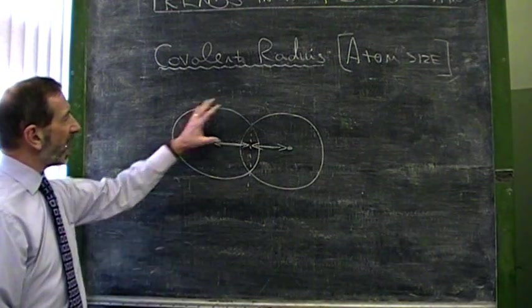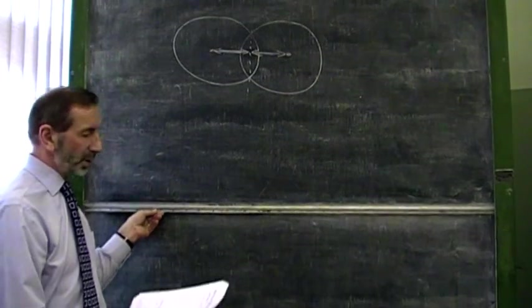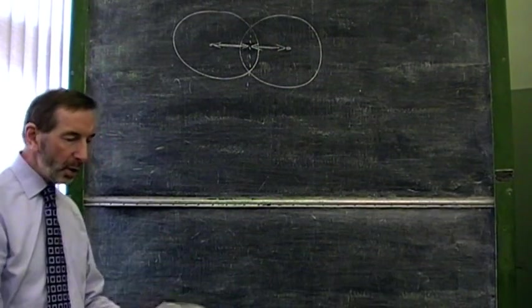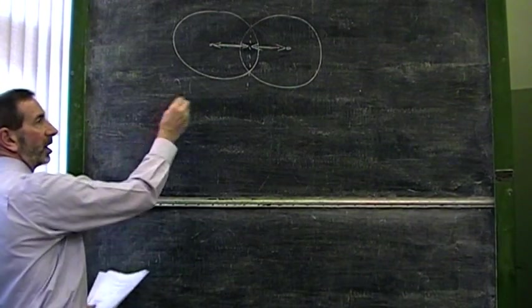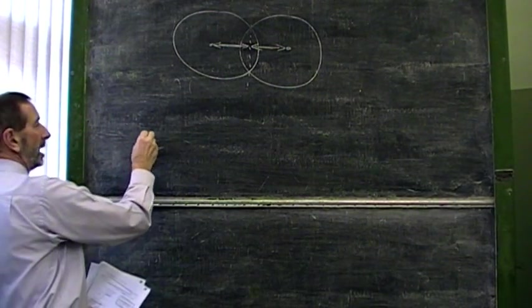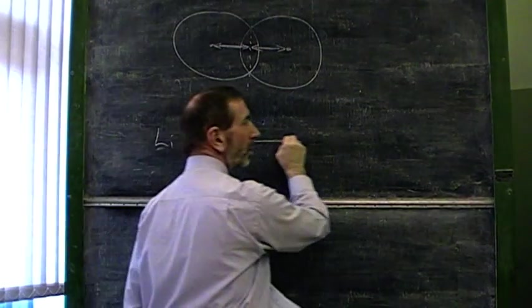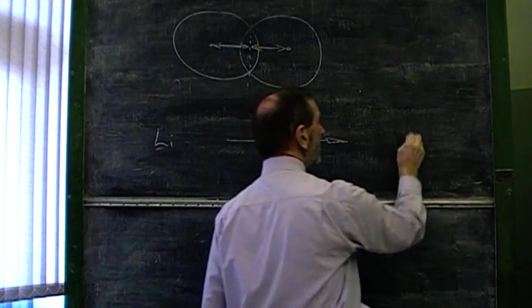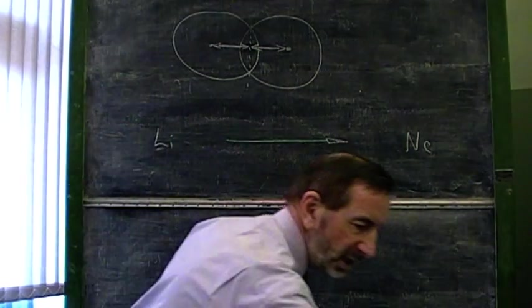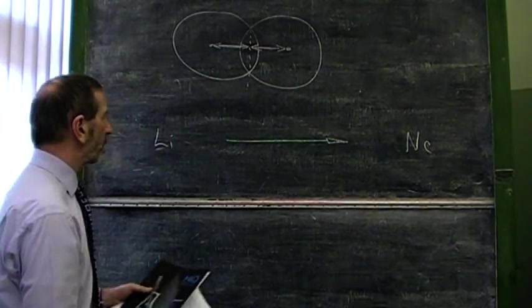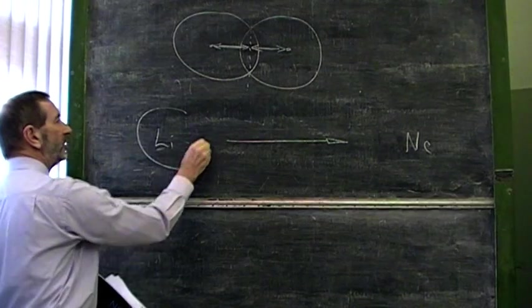How does the size of an atom change across a period and down a group? Well, let's take across a period first of all. If we look at the second row of the periodic table, that's the elements going from lithium over to neon, what do we find? We'll only have to consult the data to discover that as we go across the table, surprisingly, atom size decreases.